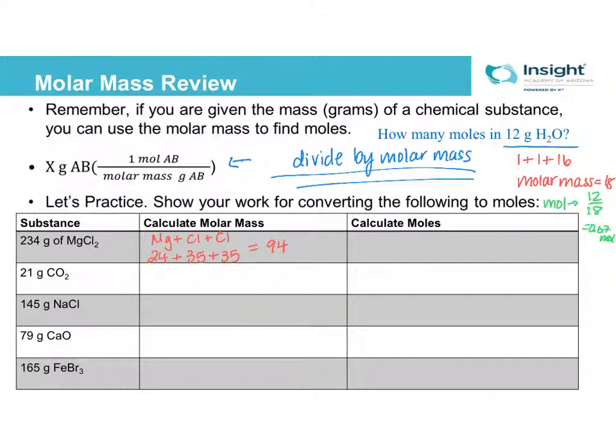So to calculate the moles, I'm going to take this value, the 234, and divide by my molar mass, which gives me 2.5 moles of MgCl2.